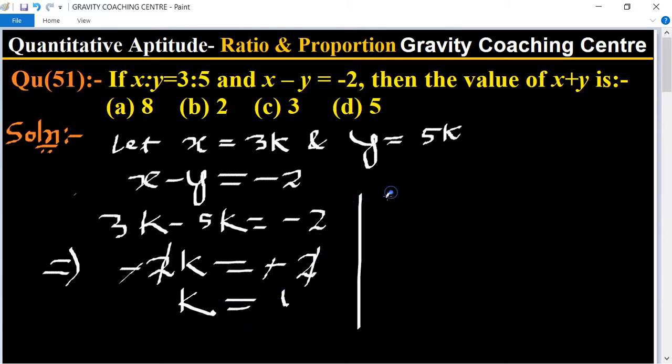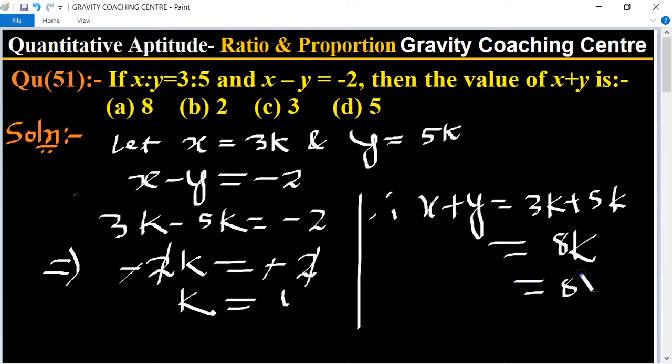Therefore, x plus y equal to 3k plus 5k, which equals 8k. And the value of k is 1, so 8 times 1 equals 8, which is the required answer.